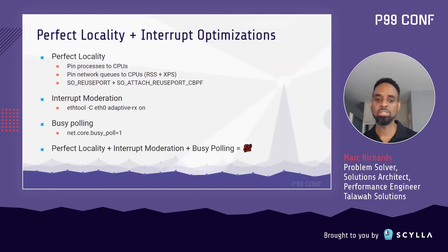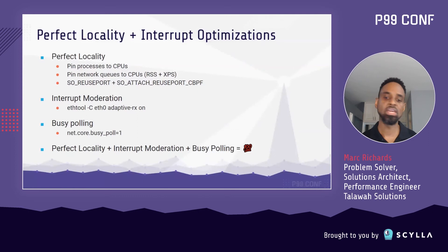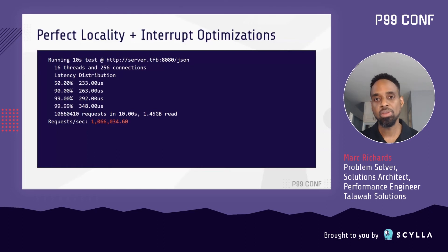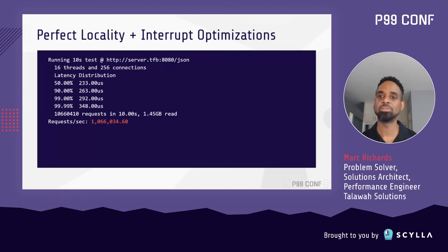It's really important to highlight the extent to which perfect locality, interrupt moderation, and busy polling all work together — if you take away any one of the three, you'll see a much less pronounced effect. With all three combined, we get a total performance boost of approximately 77%. Throughput moves from 603,000 requests per second to just over 1 million requests per second. This is a huge improvement that really just boils down to streamlining when and where data gets processed.